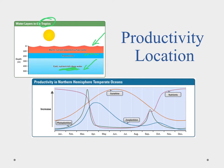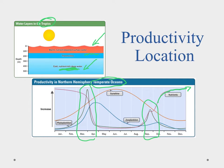If we go up to the temperate ocean regions — just outside of the tropics and a bit further north — what we notice is a couple of spikes in productivity. We're going to have one spike here in the spring, and then one here in the fall. The one in the spring occurs because as winter comes and there's less sunlight in the temperate regions, nutrients are allowed to build up a little bit.